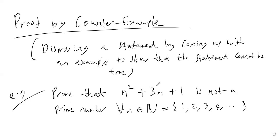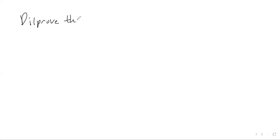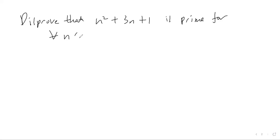To prove that this value cannot be prime for all n values, we just want to pick an n value and see if that gives us a prime number. If we can pick an n value which does not give us a prime number, then we've proved that this cannot possibly be prime for all values of n. In other words, we want to disprove that n² + 3n + 1 is prime for all n in the natural numbers.